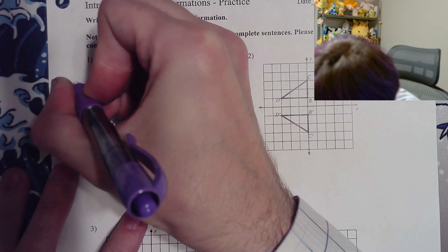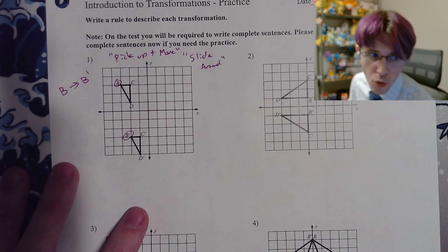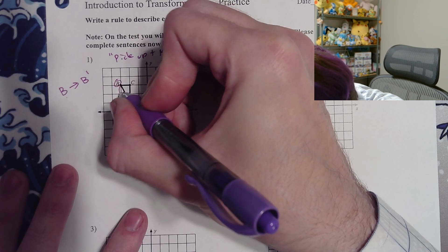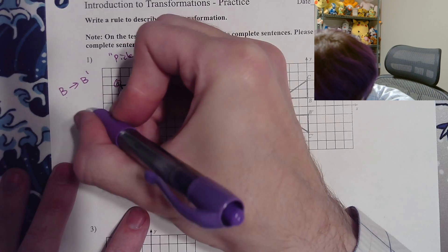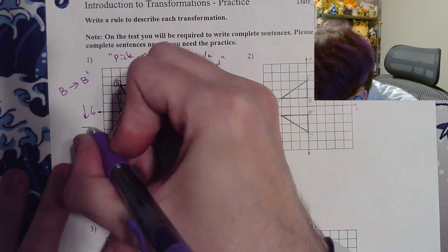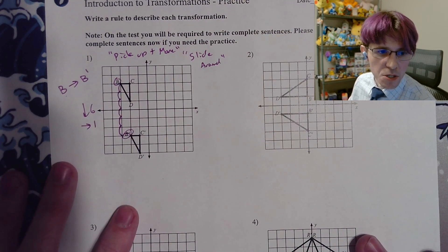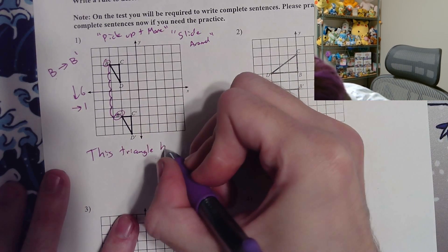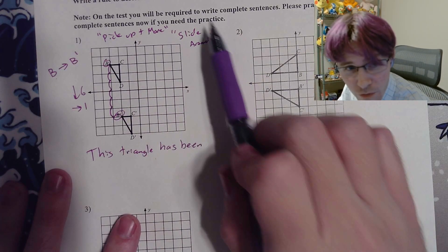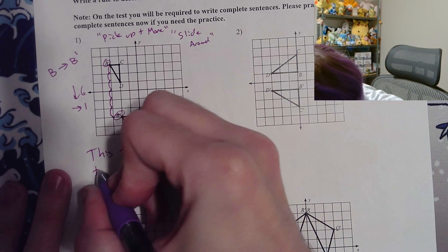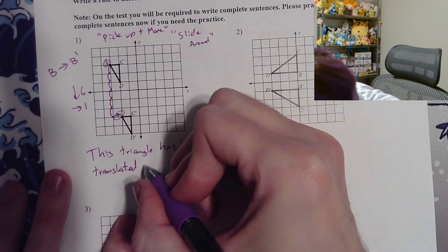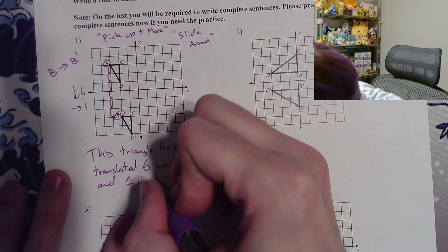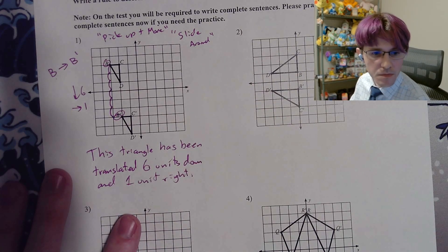You're always gonna be moving from the letter to the one with a tick mark on it and we say prime. So this is from B to B prime. And that's how you pronounce that one, B to B prime. After that, we're gonna go ahead and go one, two, three, four, five, six down. So we're going down six. And then it looks like we're going one to the right. So our complete English sentence for this one is, this triangle has been, and the correct word for pick up and move or for slide around is the word translation. This triangle has been translated six units down and one unit right. There we go. So easy peasy.